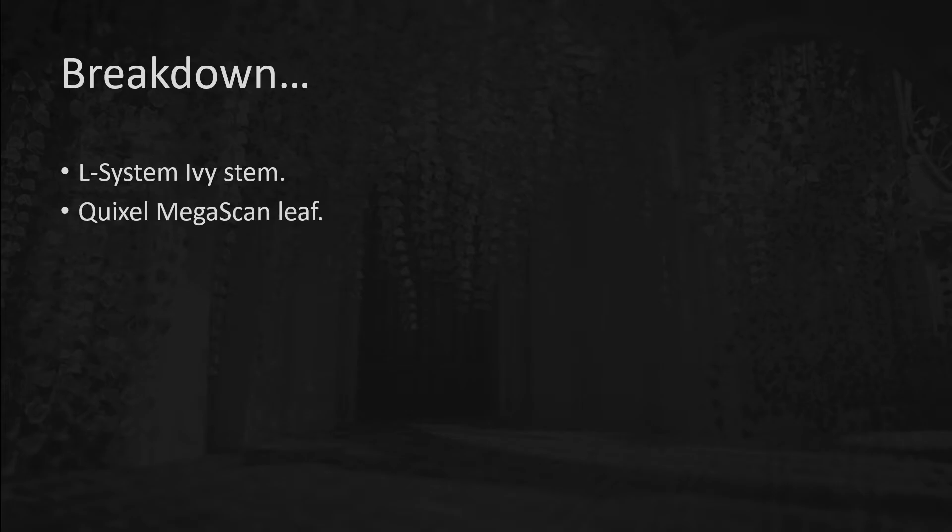Let's quickly break down how we're going to approach this. First of all, we're going to design an L-system ivy stem. If you've never used L-systems before, don't worry — we're going to take an introductory look at how we can use them to generate geometry. Then we'll move on to using a Megascans atlas texture map to create a leaf.